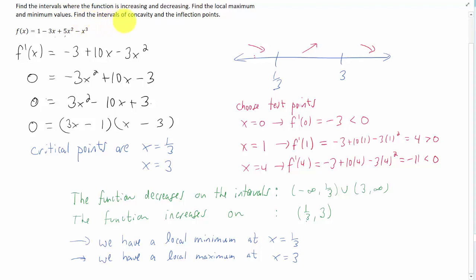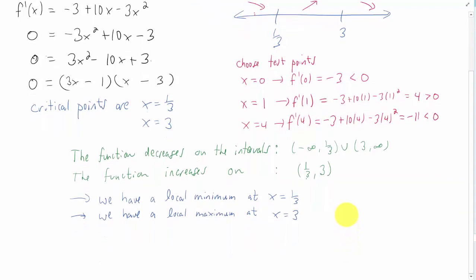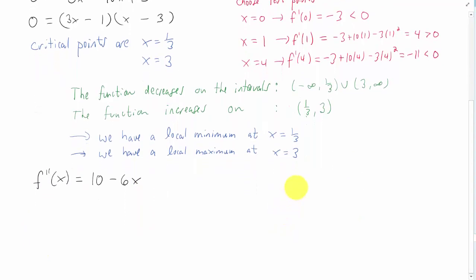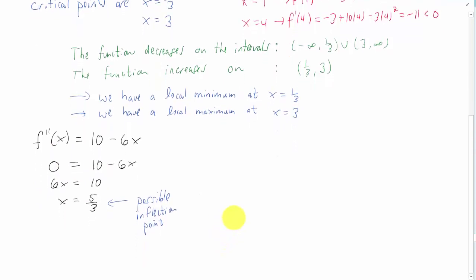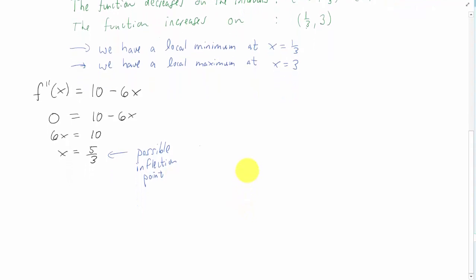We also need to find the intervals of concavity and where the inflection points might be, and we do that with the second derivative. I'm going to take the second derivative here. We can find our possible inflection points by setting the second derivative equal to zero. Solving for x, I get x equals five thirds as a possible inflection point.